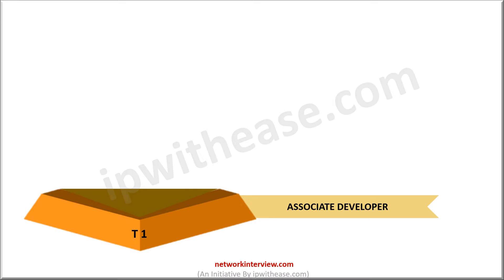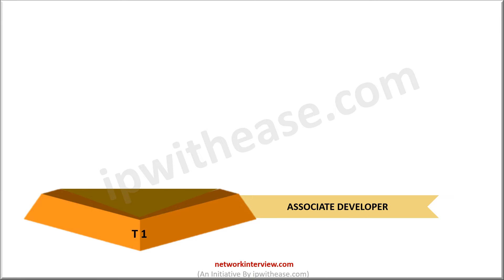After one or two years of working as an Associate Developer, you will be promoted to the role of a Developer, i.e., Band T2. As a Developer, you bear the same responsibilities as in the previous level, but the difficulty of the tasks will be higher. T2 also has subdivisions like L1, L2, L3. If you have progressed above T2 L2 subdivision, then you are ranked equal to a specialist.